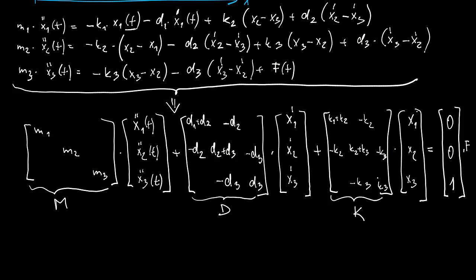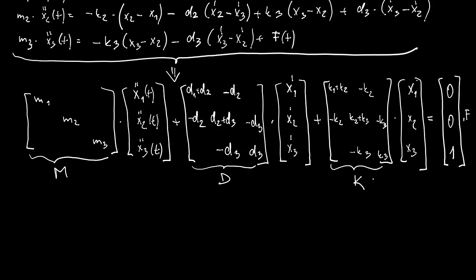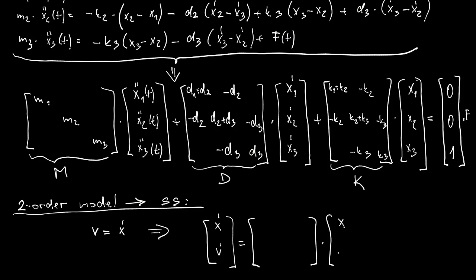Now what can we do with this particular model in order to analyze it? Similar as we did in the scalar case, we can now convert it into a state space model. We will do it simply by introducing a new state vector which is v, simply velocity, and then the new state vector is composed of x and v. So we need to find now the new matrices A and B.